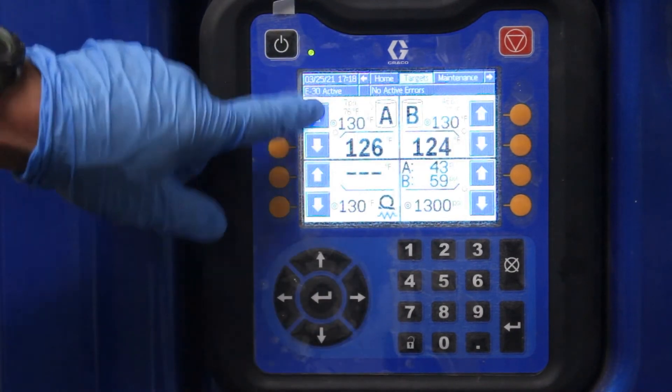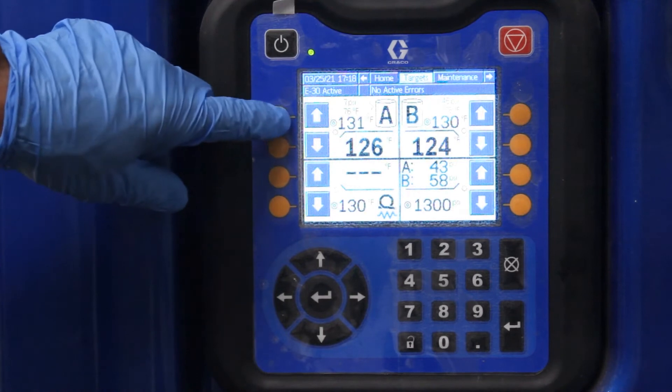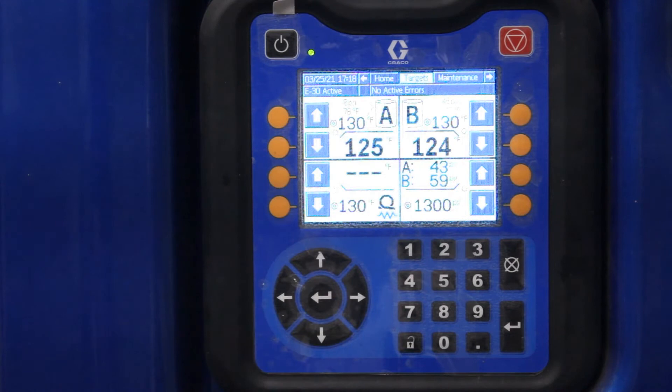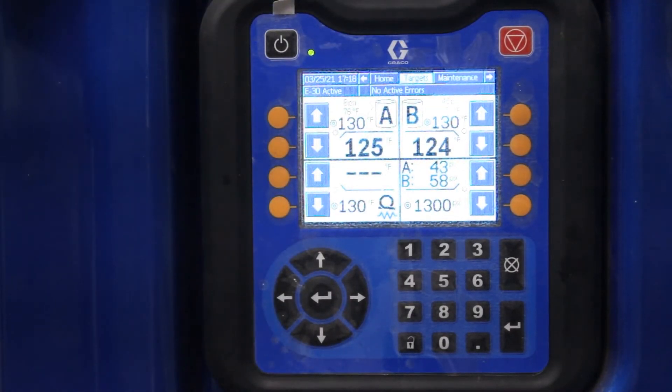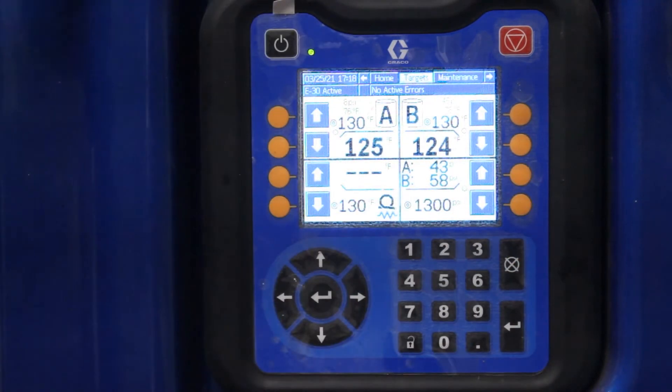On this one right here, these are your temperature settings for your heaters. If I want to go up or down, I can raise and lower by pushing the buttons to the left or to the right. Same thing on this side. Your hose heat works the same way. Your pressure does the same thing. These buttons here raise and lower the pressure.